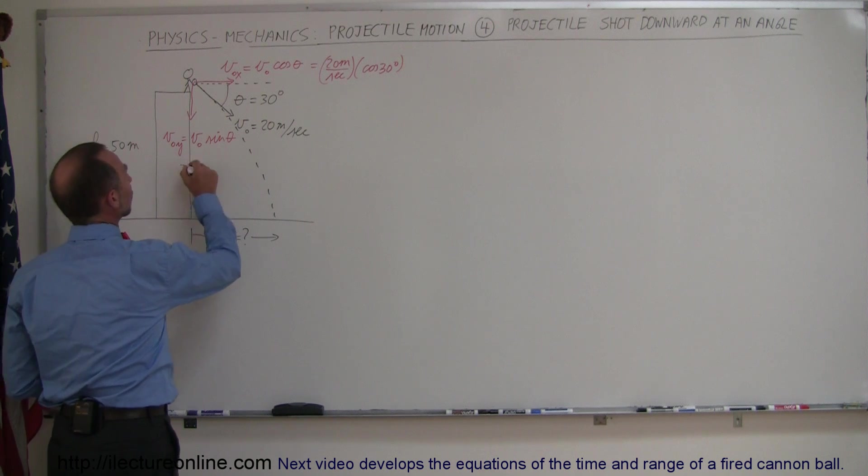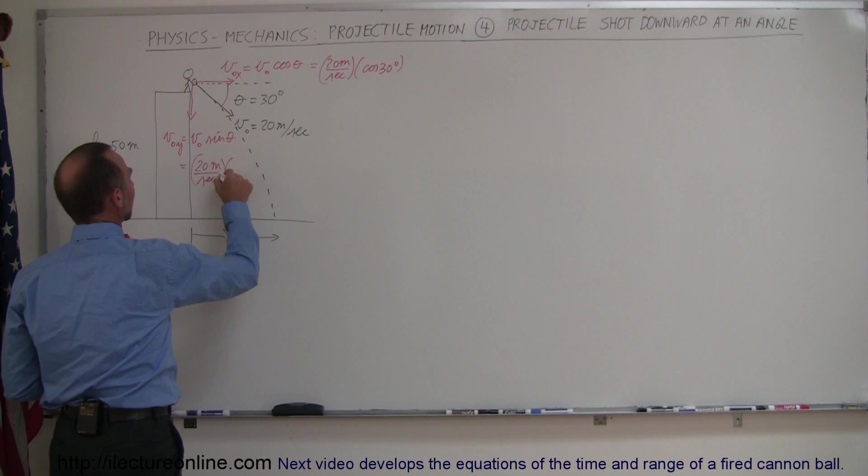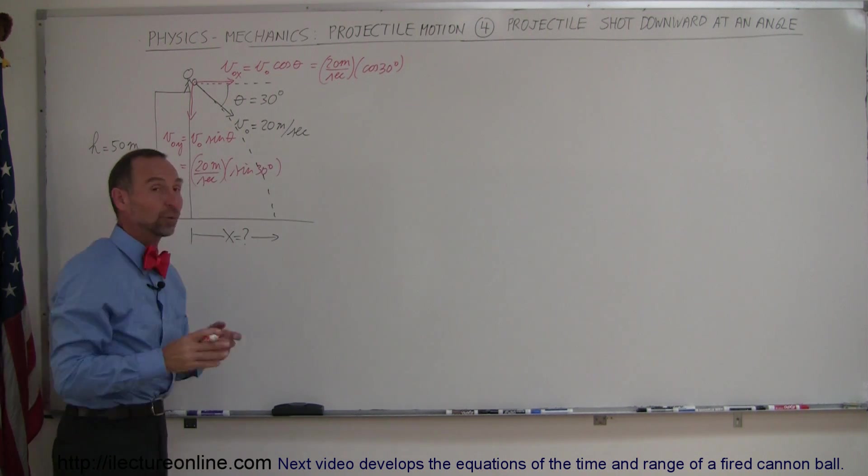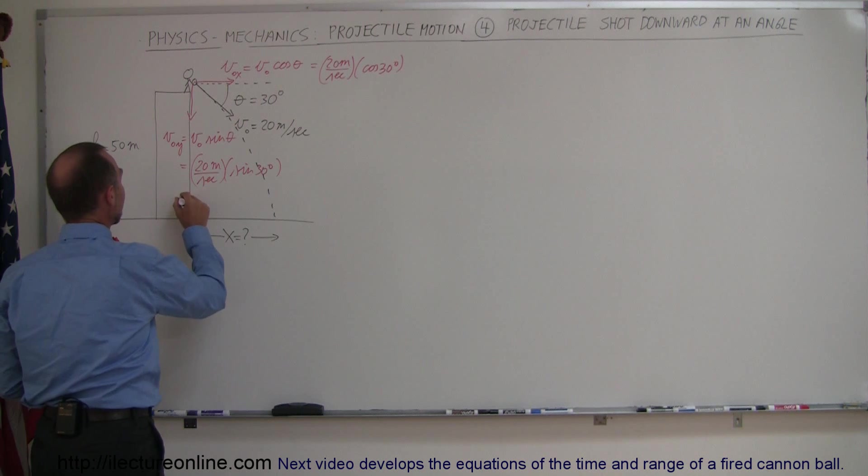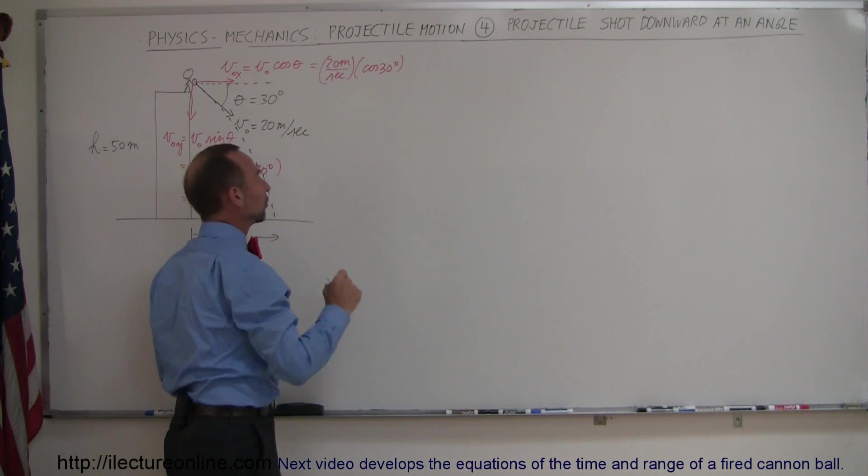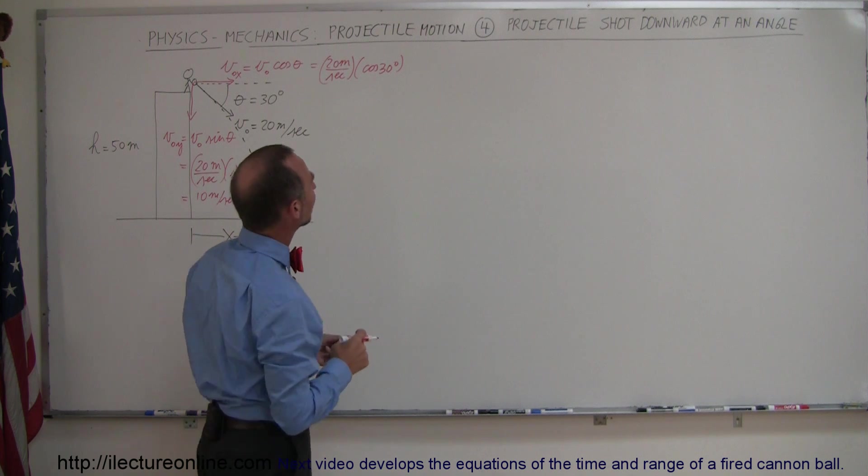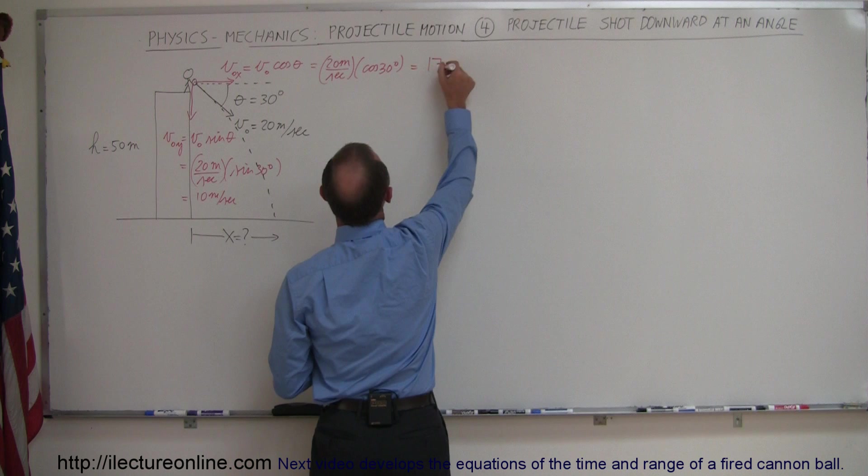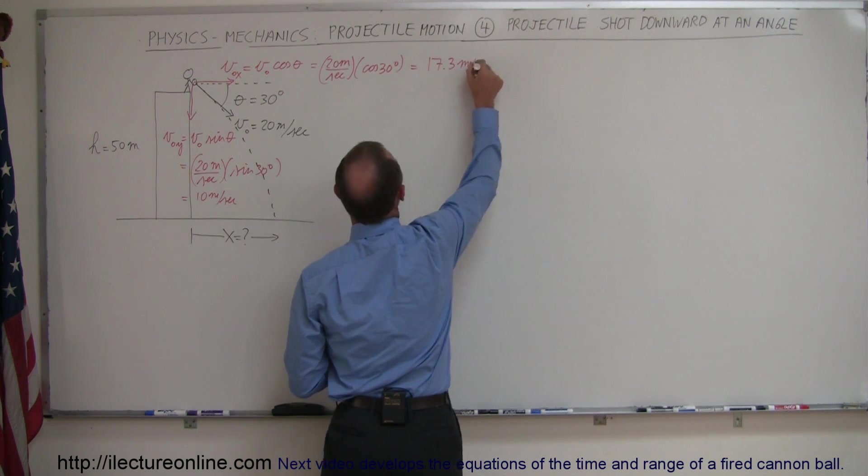This is equal to 20 meters per second times the sine of 30 degrees. Now the sine of 30 degrees of course is one half, so one half times 20 is 10 meters per second, and over here the cosine of 30 degrees is 0.866, so that would be equal to 17.3 meters per second.